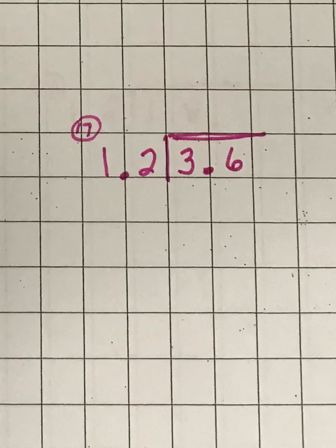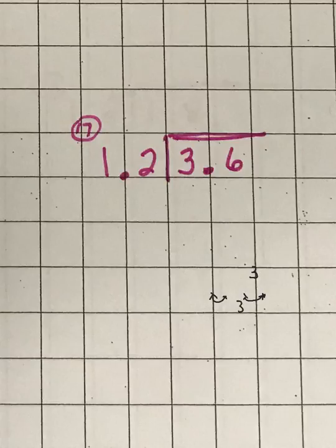This is like a previous problem — just move that decimal point one space over to make it a whole number, 12. Do the same thing on the inside; anything you do to the outside you have to do to the inside. Then 12 goes into 3 — it doesn't — but it goes into 36 three times. These answers are made pretty easy on purpose. Three times 12 is 36, remainder zero. Bring the decimal point straight up, and the answer is 3.